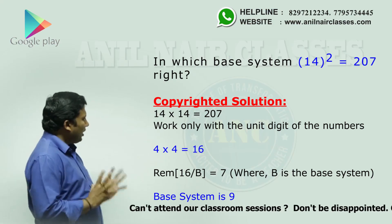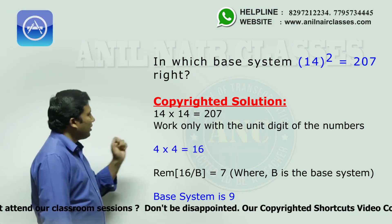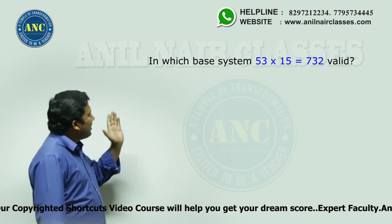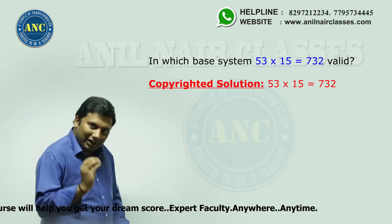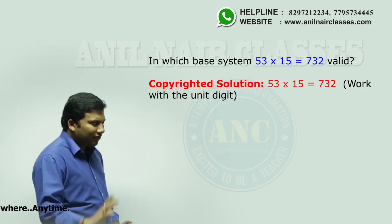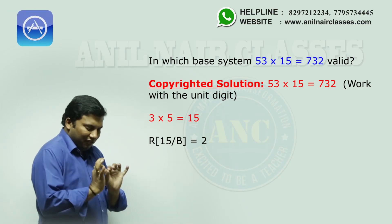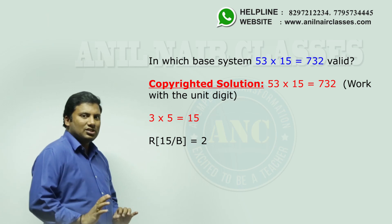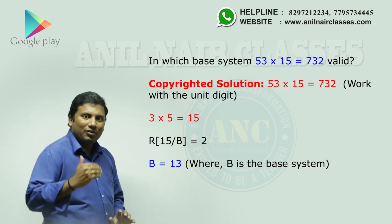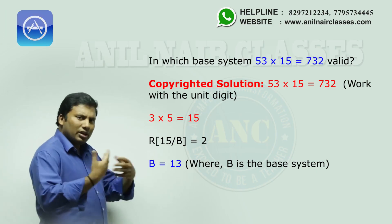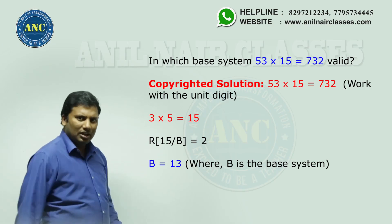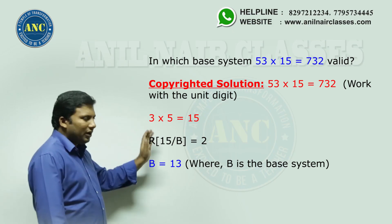Now, second question: 53 × 15 = 732. This expression is valid in which base system? Only attack the unit digit on the left hand side. 3 × 5 = 15. 15 divided by which base system gives 2 as the remainder? That base will be 13, because 13 × 1 = 13, and the remainder is 2. In hexadecimal: 0 to 9, a is 10, b is 11, c is 12, d is 13. So you can assign 13 to a particular variable like 'd'.